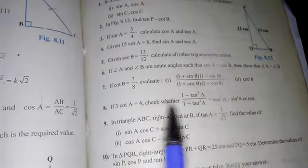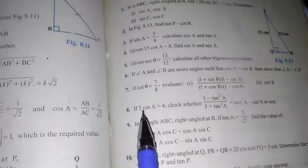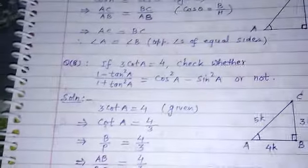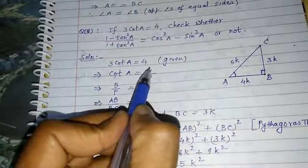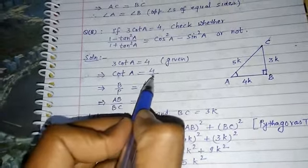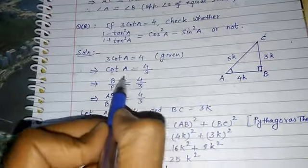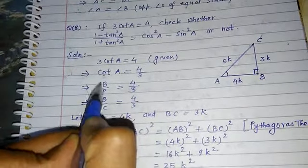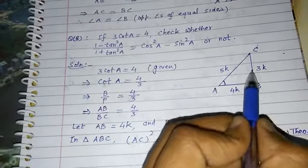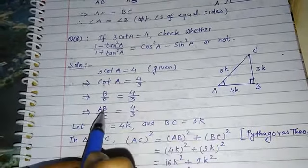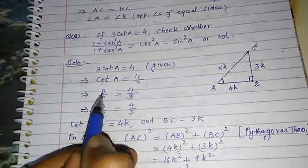We are given cot A's value and we need to prove LHS equals RHS. From 3 cot A = 4, we get cot A = 4/3. The formula for cot is base/perpendicular, so base/perpendicular = 4/3. In the triangle with angle A, base is AB and perpendicular is BC, so AB/BC = 4/3.